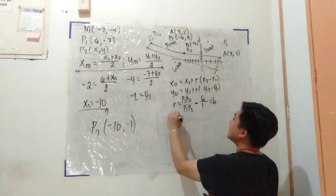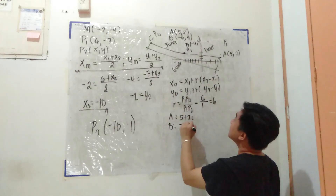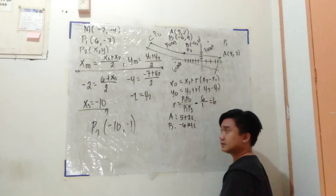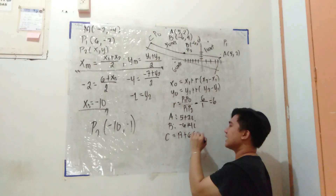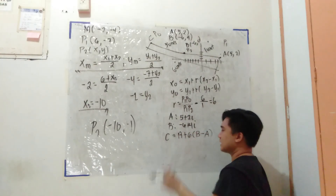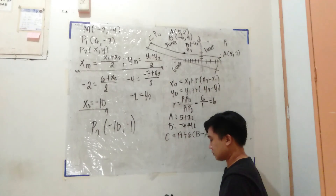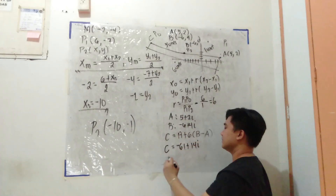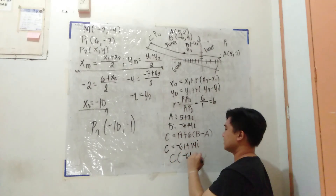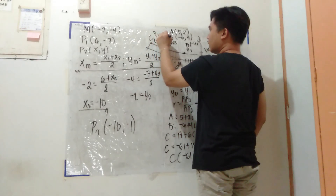So ang gagawin ko, calculator technique na lang. Mode complex: si A is 5 plus 2i, while si B ay negative 6 plus 4i. Para makuha yung coordinates ni C, that is simply A plus 6 times (B minus A). That is equal to negative 61 plus 14i, or simply negative 61 and 14. So ang coordinates nito ay negative 61, 14.